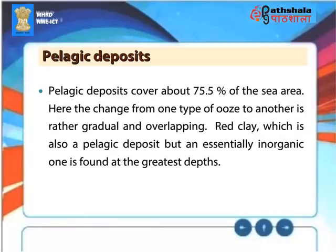Pelagic deposits cover about 75.5% of the sea area. The change from one type of ooze to another is rather gradual and overlapping. Red clay, which is also a pelagic deposit but an essentially inorganic one, is found at the greatest depths.